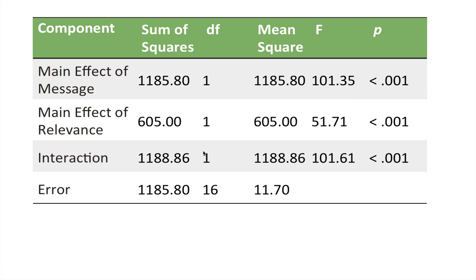To summarize: the effect of message type shows that a happy versus sad message makes a difference regardless of relevance. A high versus low relevance message also has an effect regardless of emotional content. There is also a significant interaction, meaning there's a unique combination effect of these two variables. That was how to calculate the two-way ANOVA by hand — hope you enjoyed it, bye!